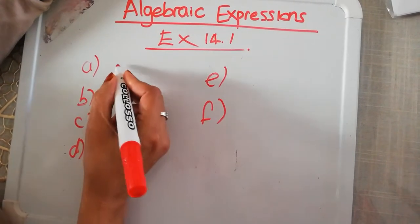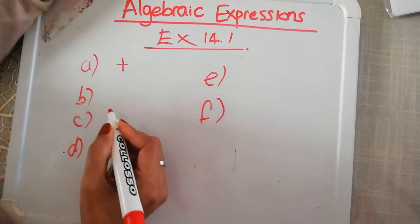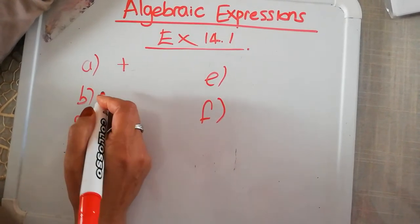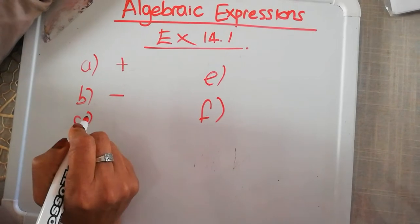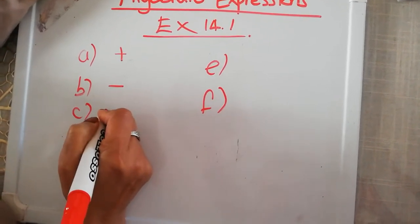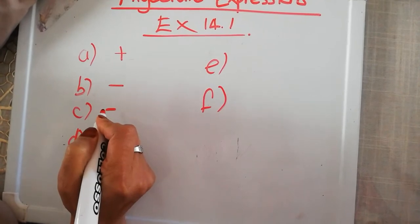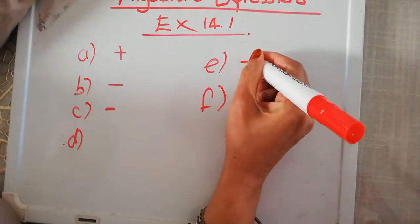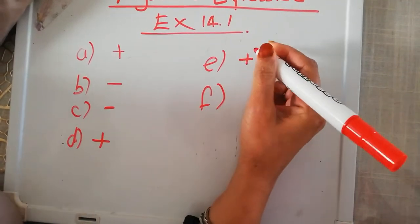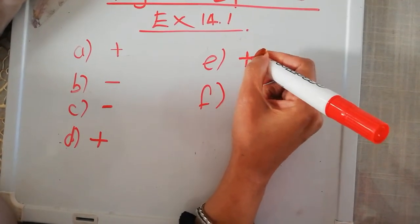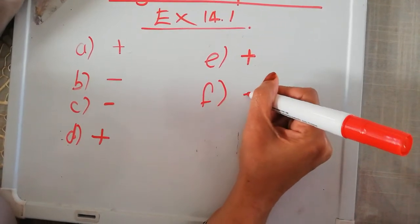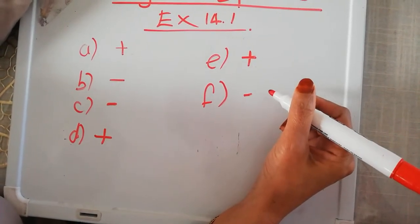In each of them, there are keywords that will tell you what operation you're going to be using. If you look at the word add, that means in the first one, you're going to be using a plus sign. B, 35 decreased by Y, you're going to be using subtraction. M less than 23 will give you subtraction. Q more than 67 will be addition. The sum of A and B will be addition. And the difference between 12 and K, where 12 is bigger than K, will be subtraction.